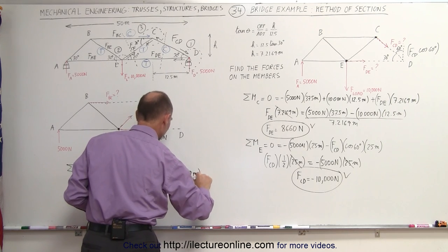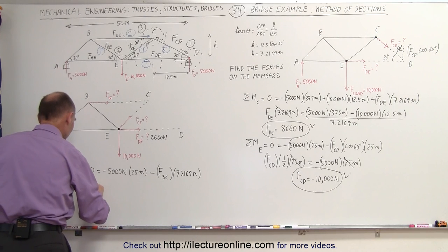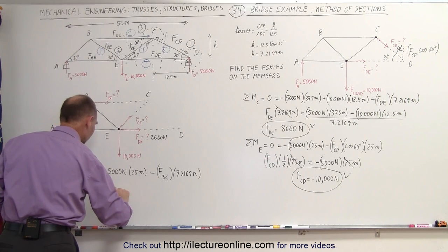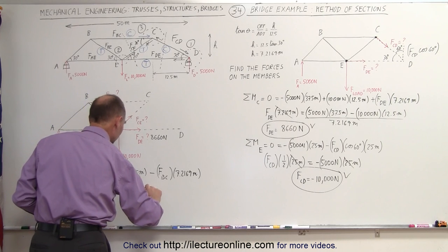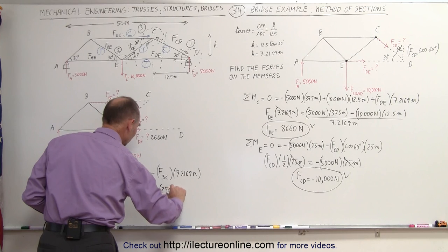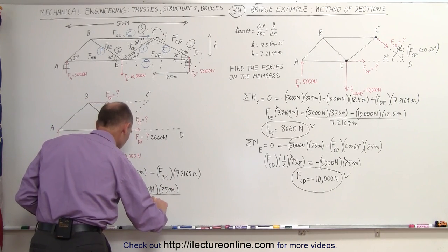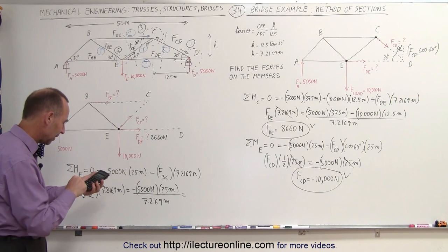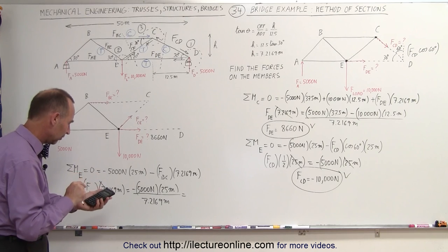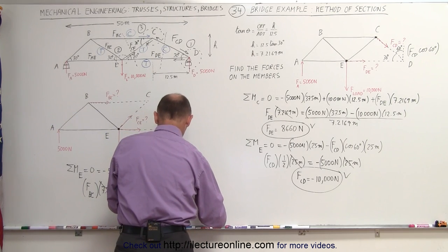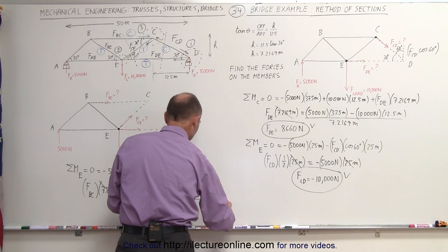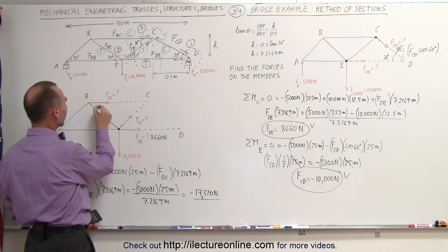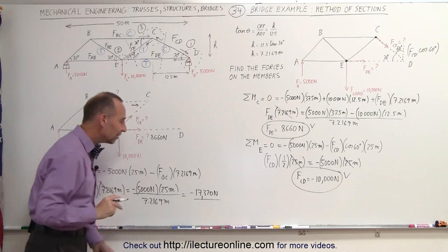So FBC multiplied times 7.2169 meters equals negative 5,000 Newtons times 25 meters. Dividing both sides by 7.2169 meters, we get FBC equal to minus 17,320 Newtons. The minus indicates that the direction is actually in the opposite direction — this is FBC, so it's actually a force of compression with a magnitude of 17,320 Newtons.